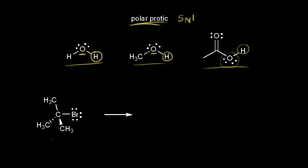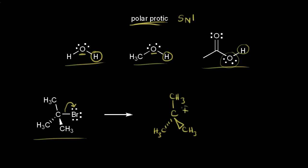Let's look at why. Down here I have tert-butyl bromide. For an SN1 mechanism, the first step would be loss of a leaving group. These electrons come off onto the bromine to form our bromide anion, and we're going to form a carbocation as well. We have a carbon bonded to three methyl groups, and this is a planar carbocation. Our carbon has a plus one formal charge.